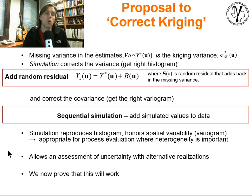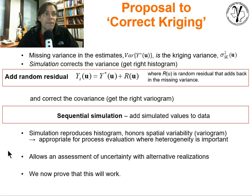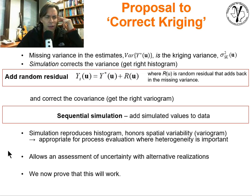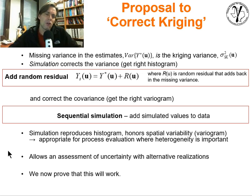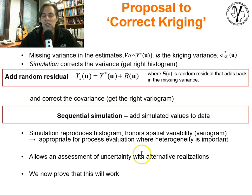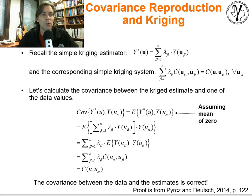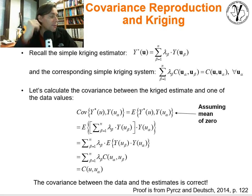Simulation reproduces the histogram and the spatial variability — the variogram — so it becomes appropriate for any type of process that requires understanding spatial heterogeneity, which for subsurface problems is very common. Kriging is really used most in settings with dense data and a very simplistic transfer function — something like volumetric calculations. Simulation also allows us to assess uncertainty globally through multiple alternative realizations. So let's go ahead and get into a couple of proofs. The proofs have been taken from the book Geostatistical Reservoir Modeling, second edition, Pyrcz and Deutsch — full credit, I believe the proof was in the first original edition by Deutsch alone back in 2004.